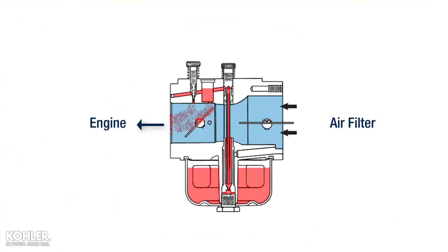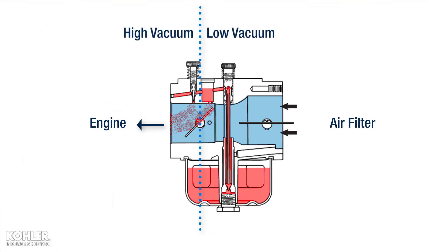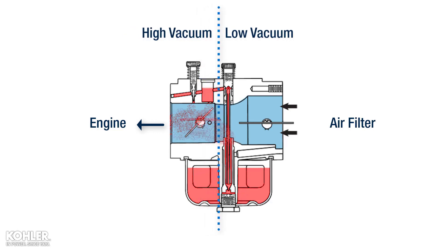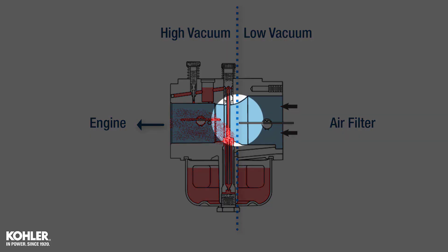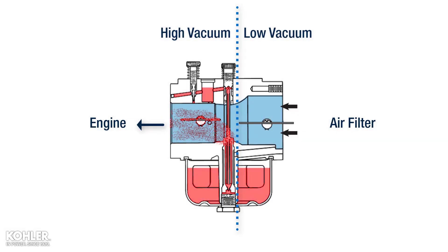The true purpose of the throttle plate is to control vacuum. When the throttle plate is partially closed, there is a high amount of vacuum on the engine side. This vacuum is required to draw and atomize fuel from the pilot and intermediate jet circuits. As the throttle plate is opened, the high vacuum moves to the Venturi. The Venturi is a fixed restriction designed into the carburetor, and the vacuum it generates is required to draw fuel from all jet circuits.